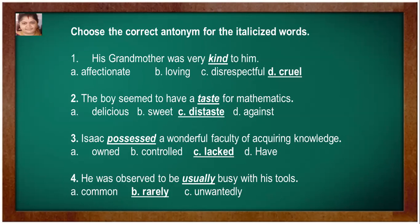The boy seemed to have a taste for mathematics. Options: delicious, sweet, distaste, against. Answer is distaste. Isaac possessed a wonderful faculty of acquiring knowledge. Options: owned, controlled, lacked, have. Answer is lacked.